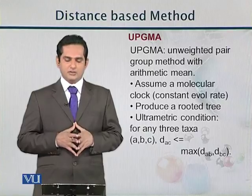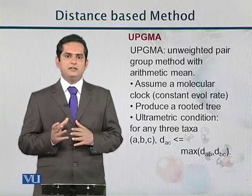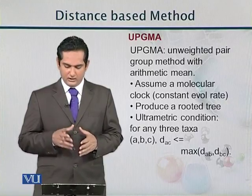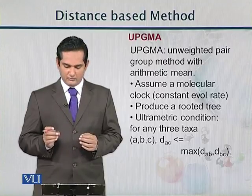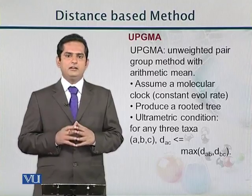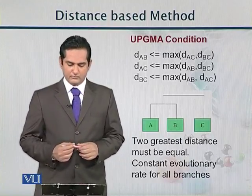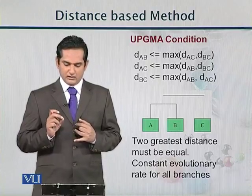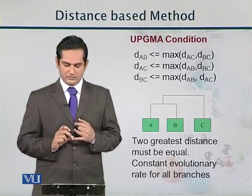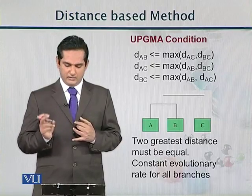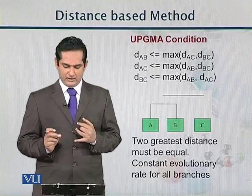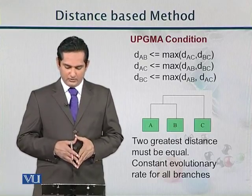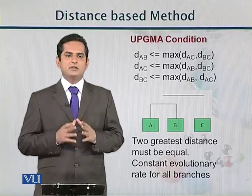What is the ultrametric condition? For any nodes A, B, C and D: the distance D(A,C) will be less than or equal to the maximum of the other two distances D(A,B) and D(B,C). These three conditions state that distance between A and B is less than or equal to D(A,C) and D(B,C); similarly for D(A,C) and D(B,C). What we conclude is that the two greatest distances must always be equal, implying a constant evolutionary rate for all branches in the tree.